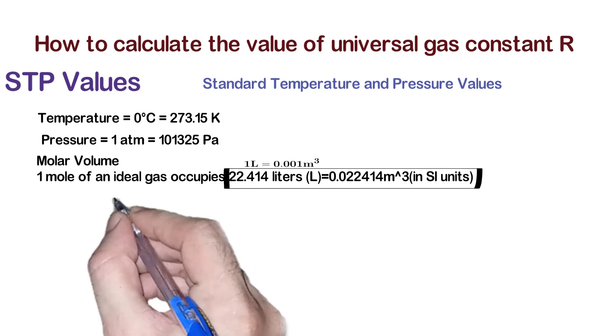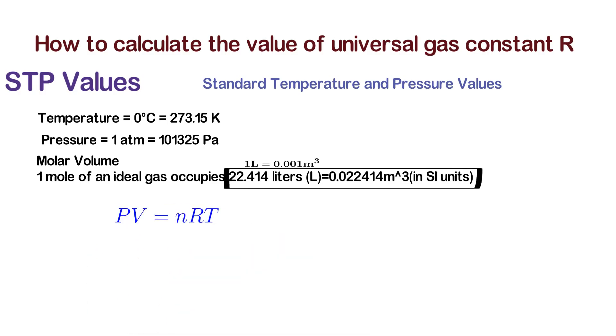We know that the ideal gas equation is PV = nRT. Solving this equation for the value of universal gas constant R, we get R = PV/nT.